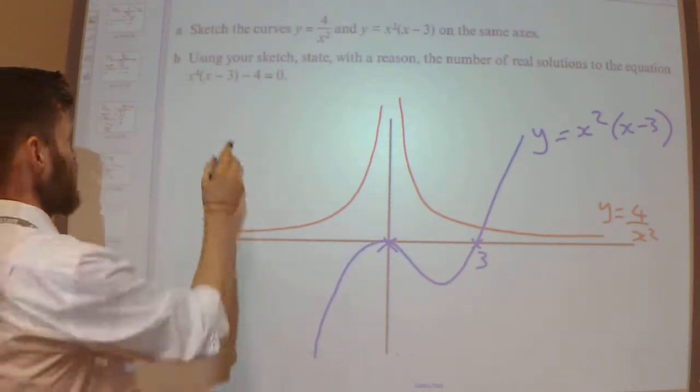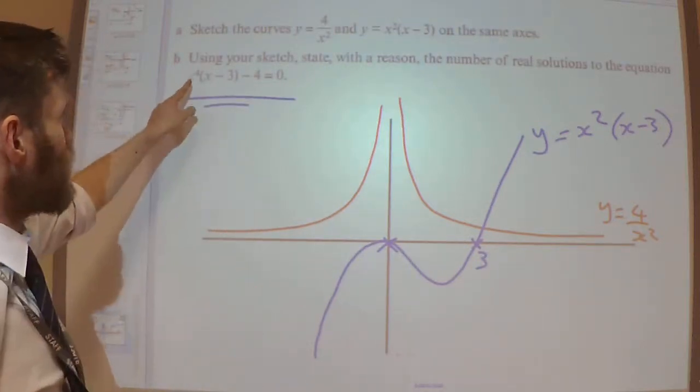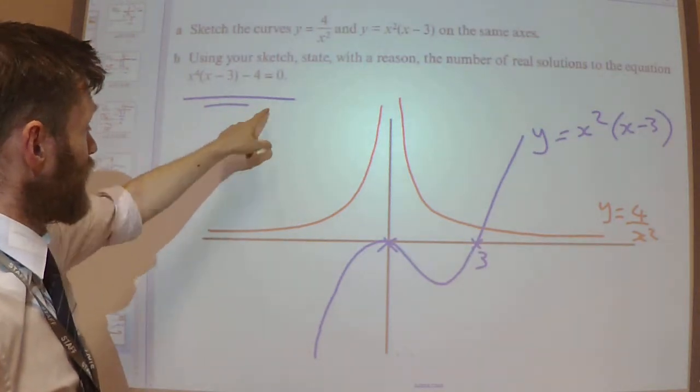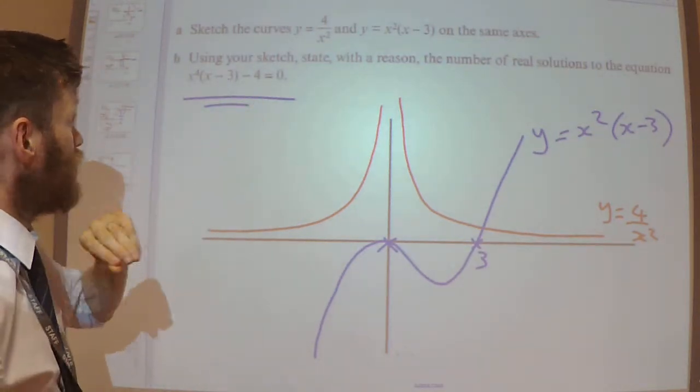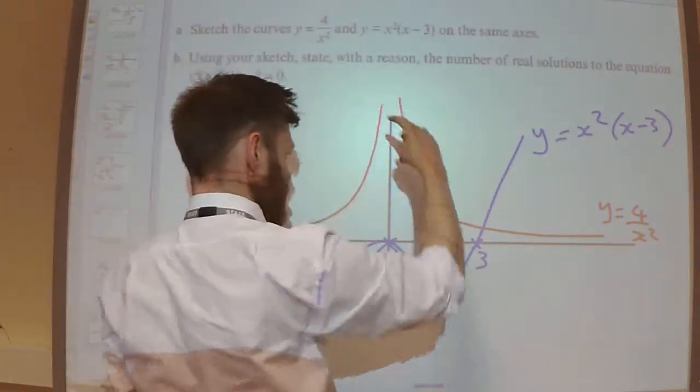Now to begin with, this equation seems a bit random. x⁴(x-3) - 4 = 0. Well, it says using my sketch, so this has got to have something to do with this and the sketch. It's probably referring to where these graphs intersect.